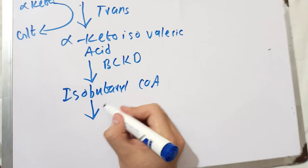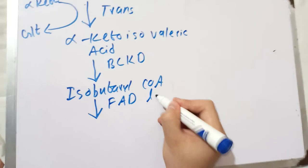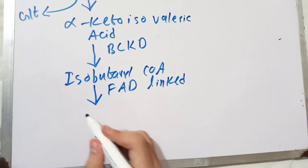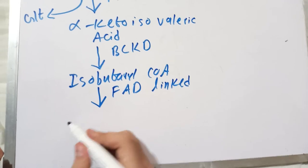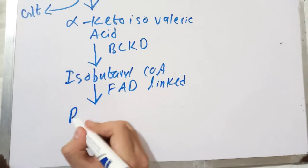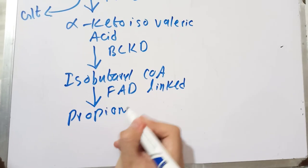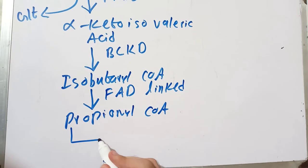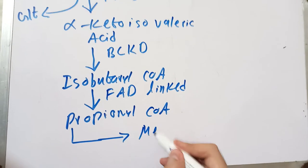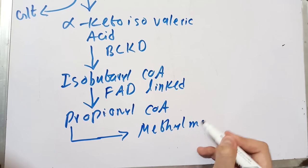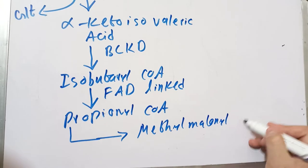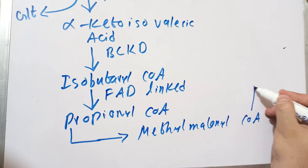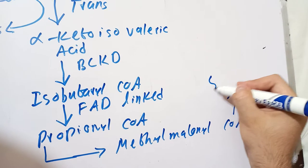The FAD-linked dehydrogenation of isobutyryl-CoA leads to the formation of propionyl-CoA. This propionyl-CoA will be converted into methylmalonyl-CoA, and this methylmalonyl-CoA will then be converted into succinyl-CoA.